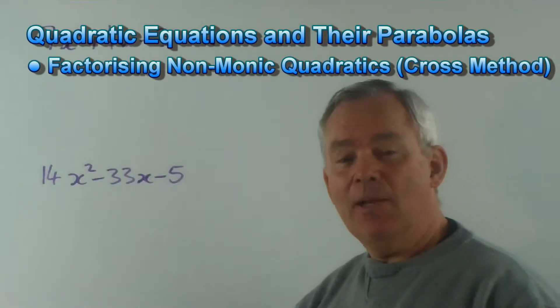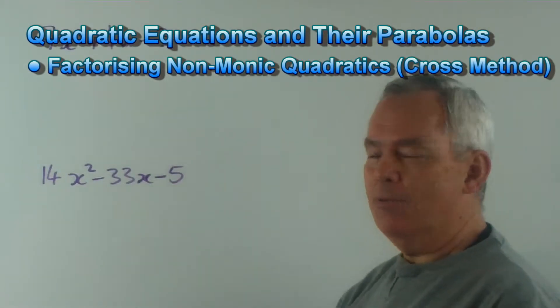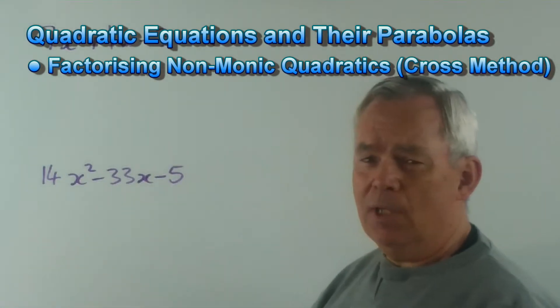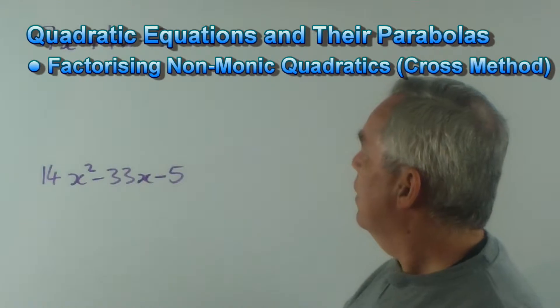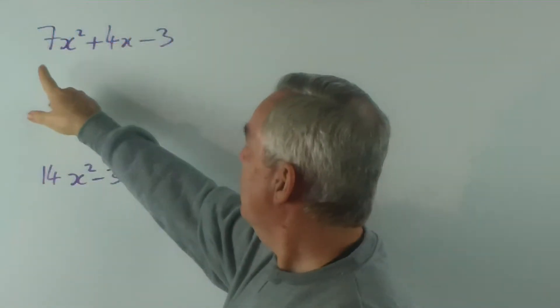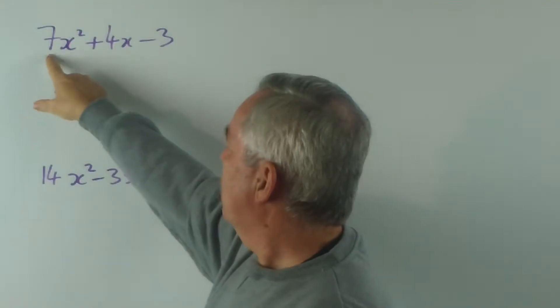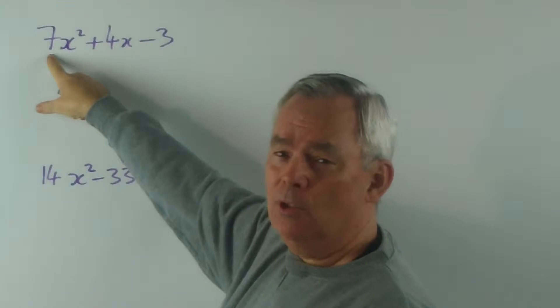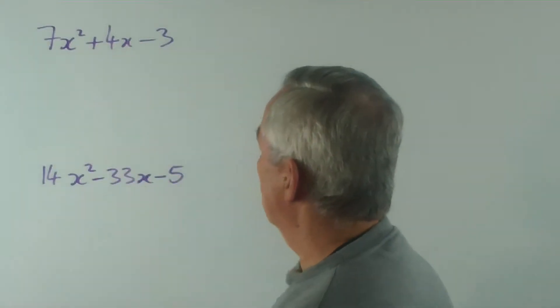G'day. It's time now for us to look at non-monic quadratic equations, at least to factorize them. What is a non-monic quadratic? Well, a monic quadratic is one that says mono, meaning one. It's one x squared. If we have any number except one in front of the x squared, this is called non-monic. It's a non-monic quadratic.